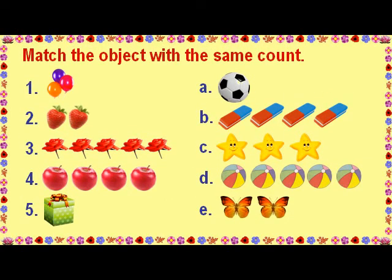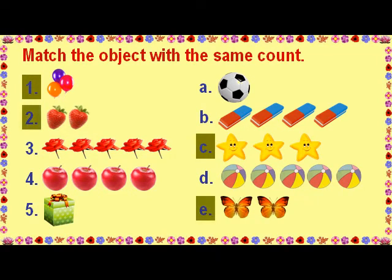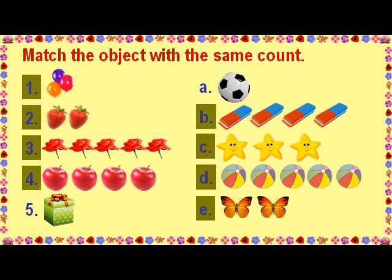Match the object with the same count. Three balloons — match with three stars. Two strawberries — match with two butterflies. Five roses — match with five balls. Four apples — match with four erasers. One gift box — matches with one ball.